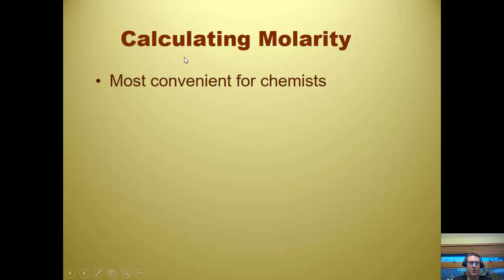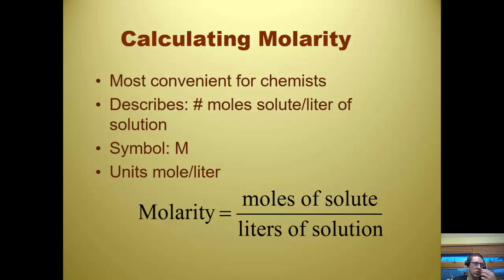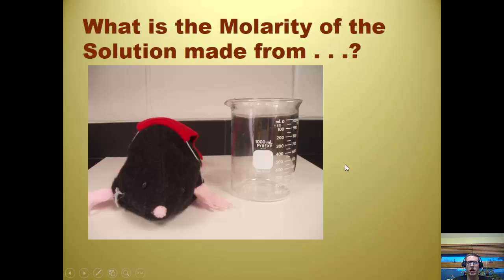Calculating molarity. It is most convenient for chemists. It describes the number of moles per solute divided by the liter of the solution. The symbol is always that capital M. Don't use lowercase m because that's meters. The units are mole per liter. Molarity equals the moles of the solute divided by the liters of the solution, or M equals mole over liter. Don't use milliliter. That's what we used in density. It always has to be in liters for molarity.